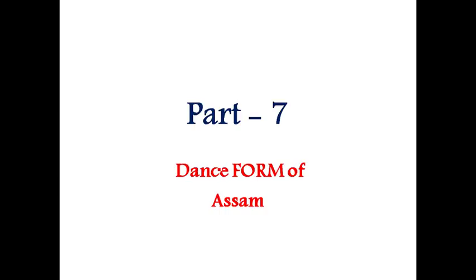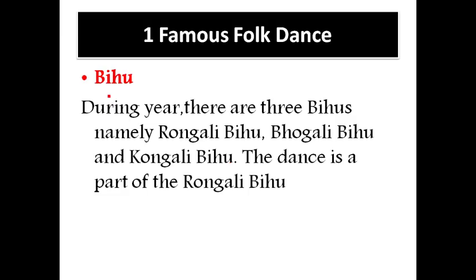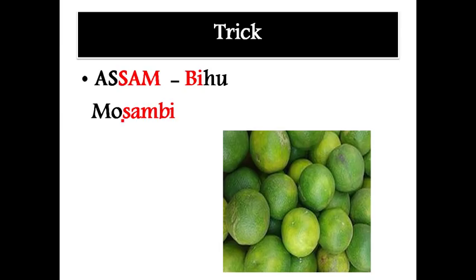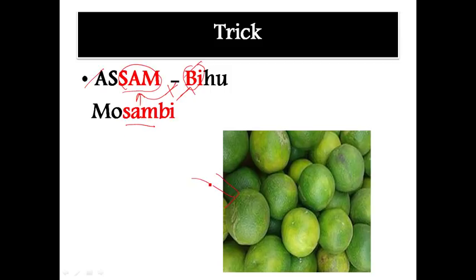Part 7: Dance form of Assam. The famous dance is Bihu. There are three types of Bihu: Rangali Bihu, Bogali Bihu, and Kongali Bihu. The dance is part of Rangali Bihu. The trick: take the last three letters of Assam (s-a-m) and the first two letters of Bihu (b-i) to get 'Mosambi', a famous fruit. Assam = Mosambi's SAM, Bihu = BI.